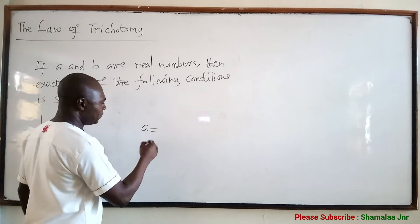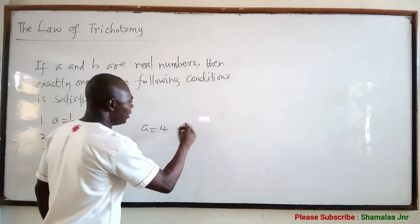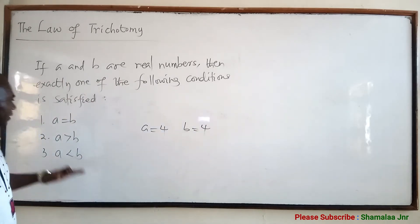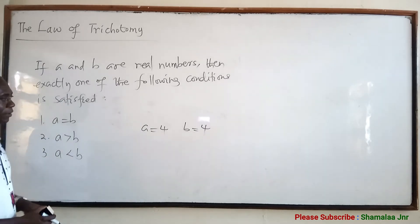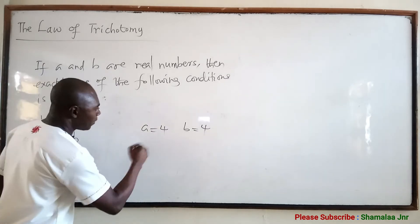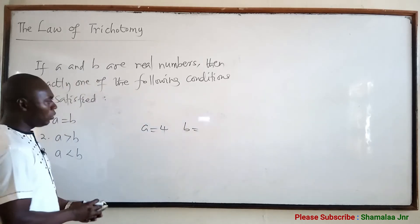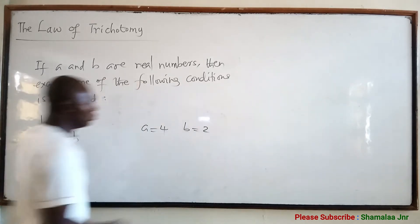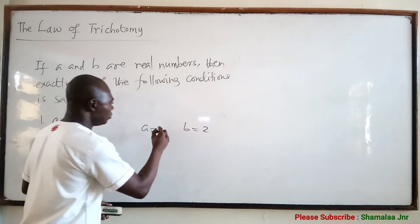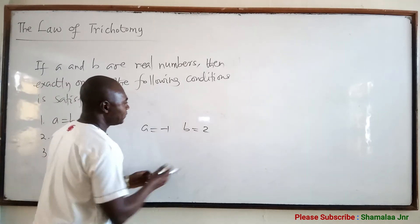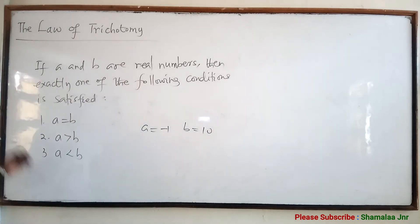If A is equal to 4 and B is equal to 4, then the first condition will be satisfied. Now, if A is equal to 4 and B is equal to 2, the second condition has been satisfied. And then lastly, if A is equal to negative 1 and B is equal to 10, we can say that the third condition has been satisfied.